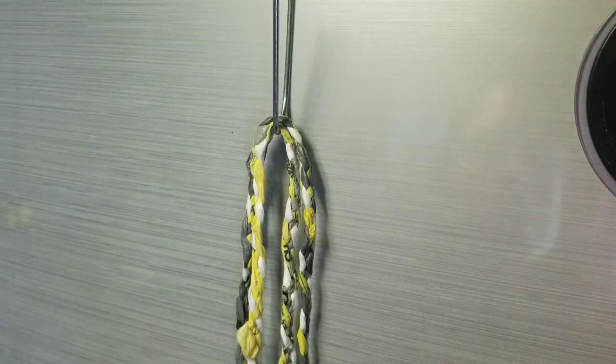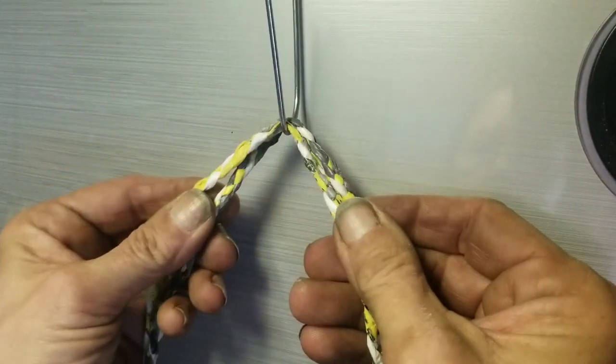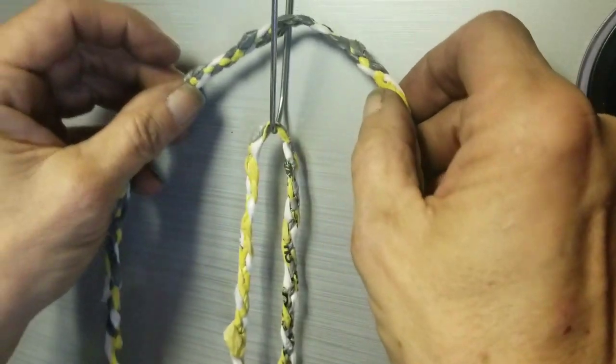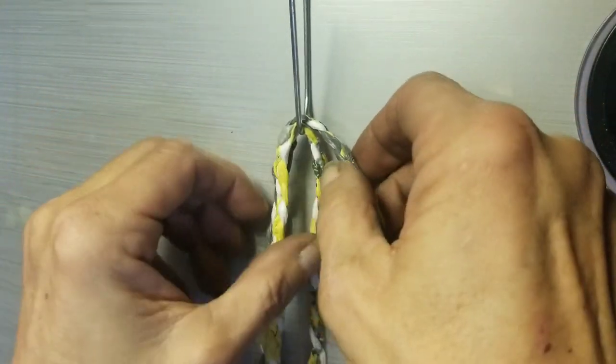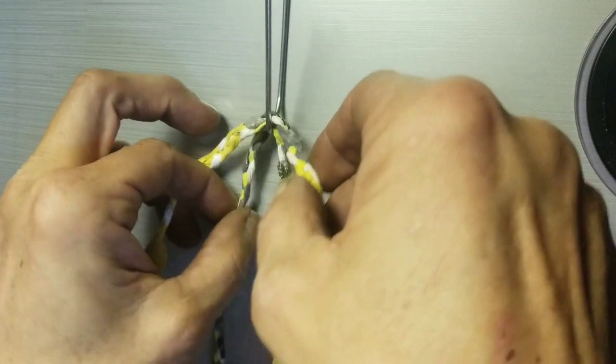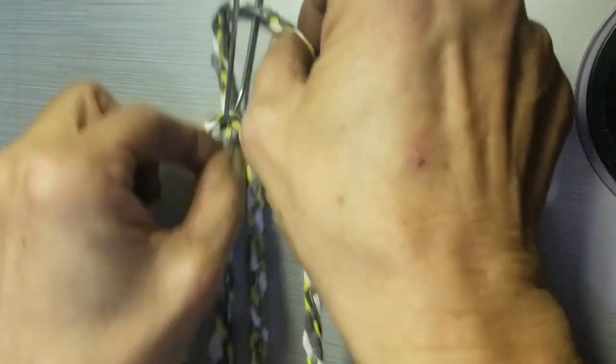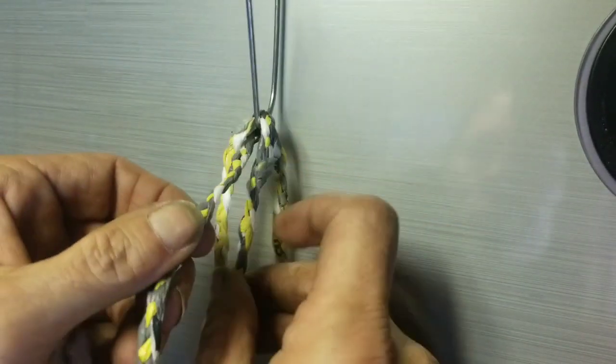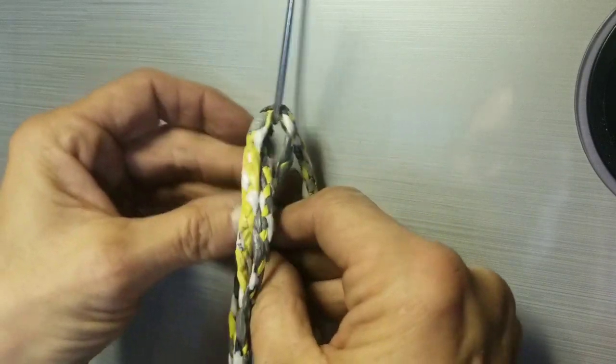All right, today I'm going to show you how to do a very simple four strand round braid. We have two pieces here. You start out by taking your one piece and just cross it under in between your other pieces.